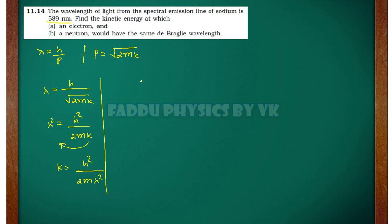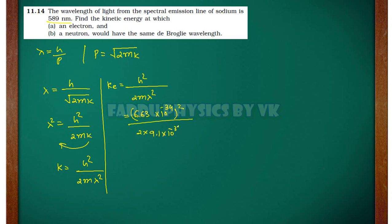For the electron, K.E. equals H squared divided by 2m times lambda squared. Here H is equal to 6.63 × 10⁻³⁴, whole squared, divided by 2 times the electron mass, 9.1 × 10⁻³¹, into 589 × 10⁻⁹ squared. If you simplify this, you will get K.E. equal to 6.96 × 10⁻²⁵ Joules.